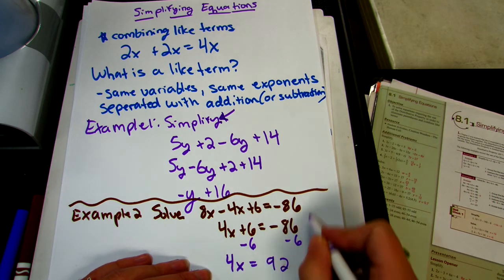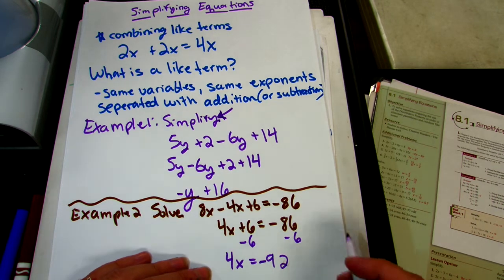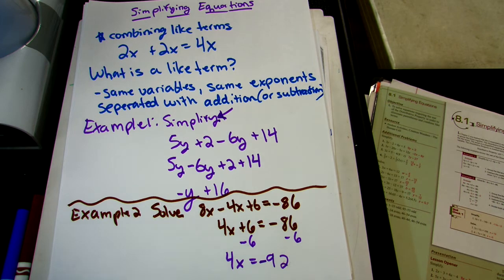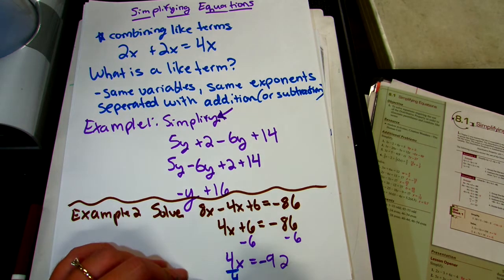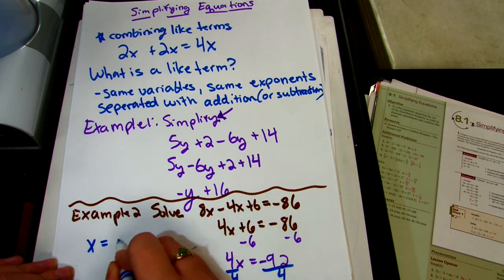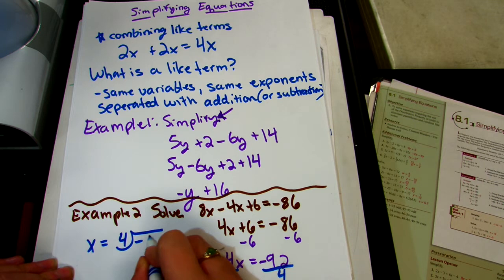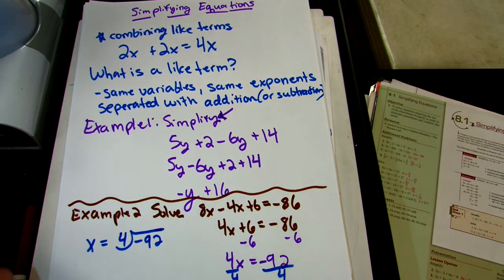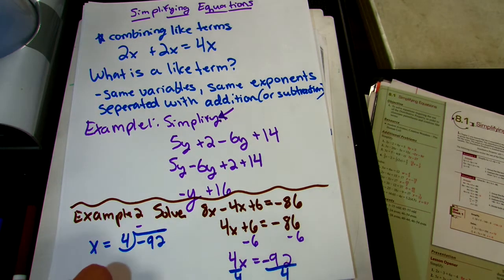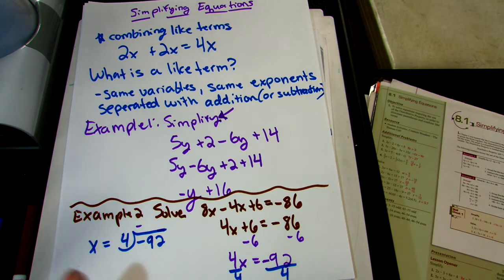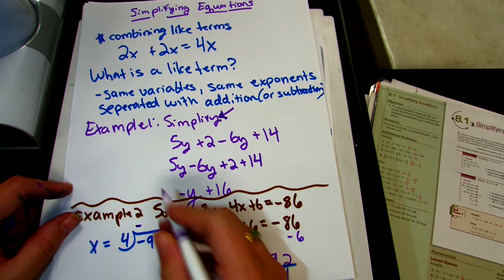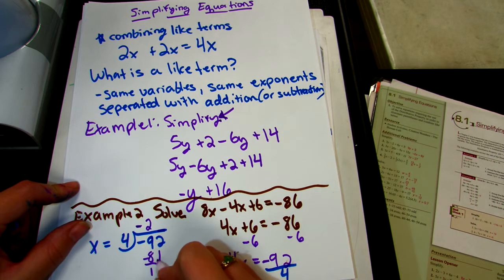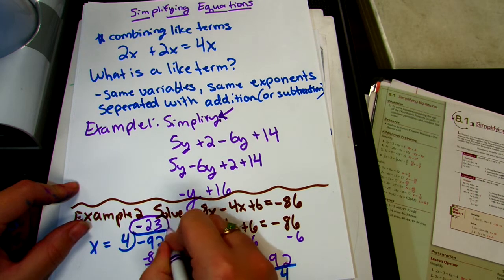They are both negative, which means I'm going to add them together — 6 and 86 is 92, and negative and more negative is more negative, so it gets negative 92. Last step: to solve for x, get rid of the multiplication by dividing. So x equals negative 92 divided by 4. We have a positive and a negative, which means the answer is negative. 4 goes into 9 twice, bring down the 2, 4 goes into 12 three times, remainder 0. Our answer is negative 23.